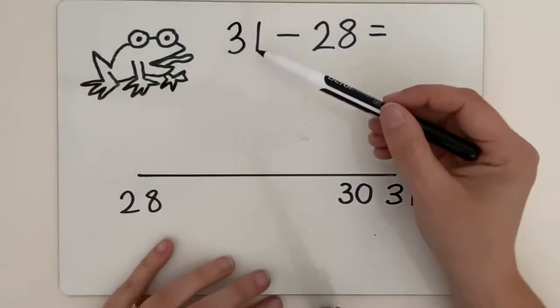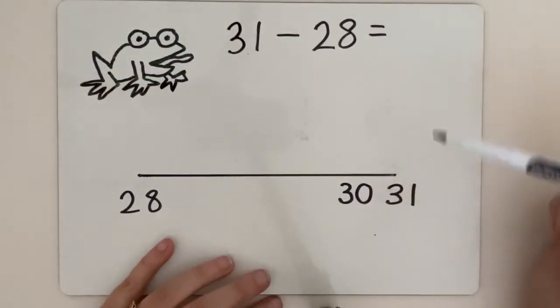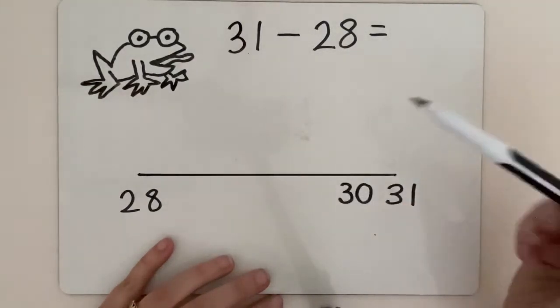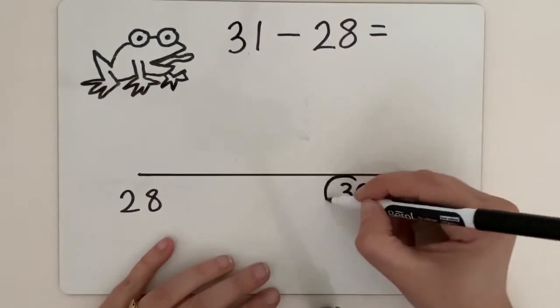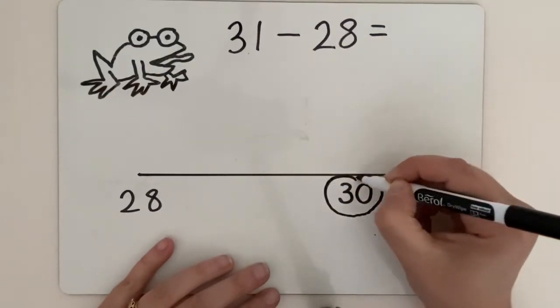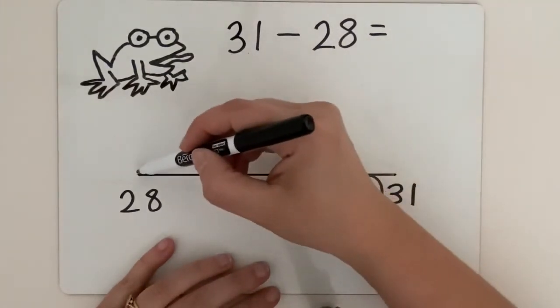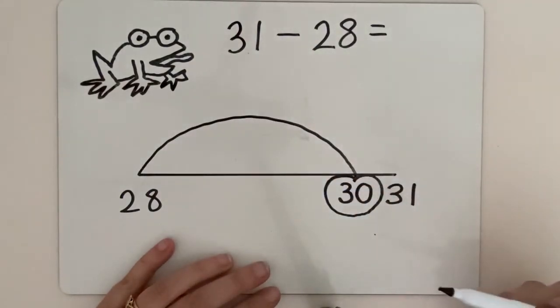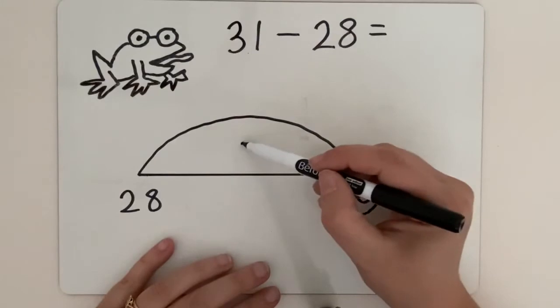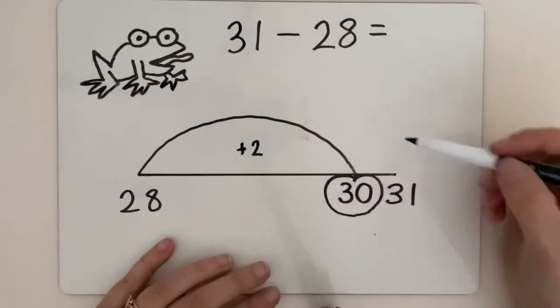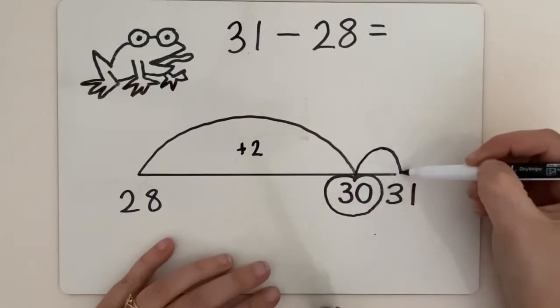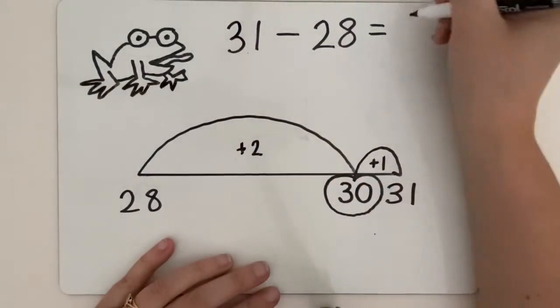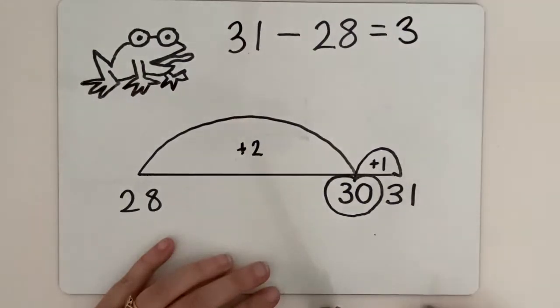This time we've got 31 take away 28. You can see I've set up my number line here. I've started at 28. My frog, as before, is going to jump to that big fat round tens number lily pad. It's going to jump from 28 to 30. If you use your number bonds to 10, you know that is 2. And then a teeny tiny jump here to 31 of 1. Add the two jumps, 2 add 1. Easy peasy. It's a difference of 3.